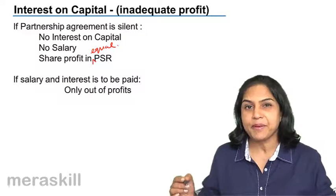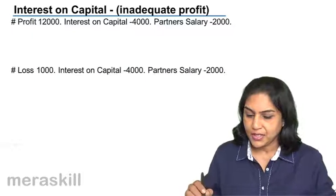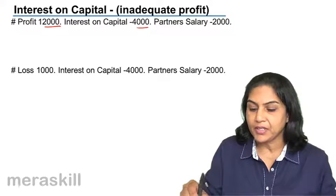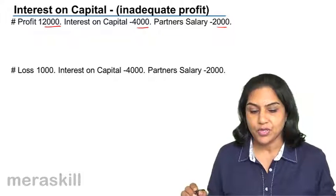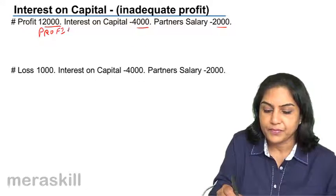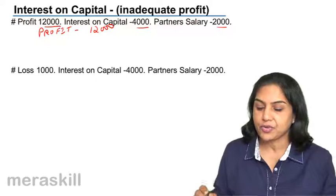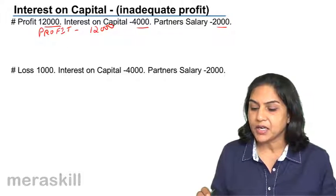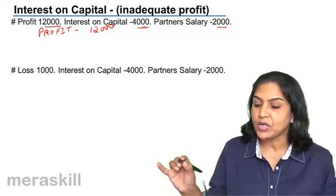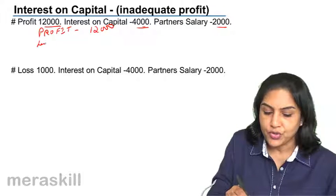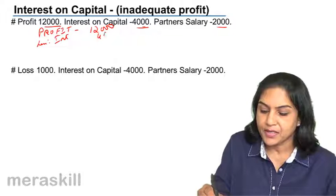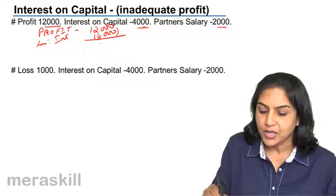Let us see what the implication of this is. Look at this example: profit is 12,000, interest on capital is 4,000, partner salary is 2,000. So there is a profit of 12,000. Interest on capital is 4,000, salary is 2,000 — a total of 6,000. We give the partners entitled to interest 4,000, so we have a balance of 8,000.